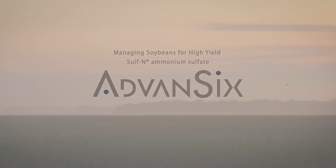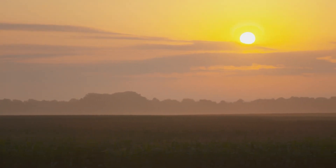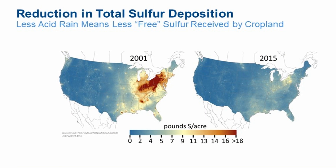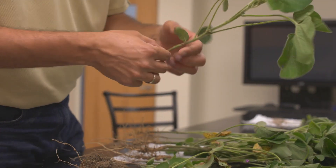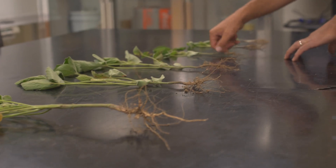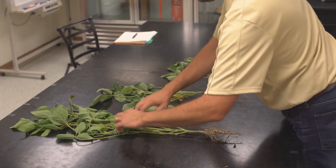High yield soybean management requires a systems approach — being intentional, not just rotating a crop after corn. That means a firm foundation with the fields, whether tillage or no-till, and proper fertility. Soybeans need to be fertilized for the yield levels you want. Sulfur in particular has been coming up, as deposition has declined. It's really key for nodule development and nitrogen supply, from early leaf biomass development all the way through to finishing pod fill at the end of the season.